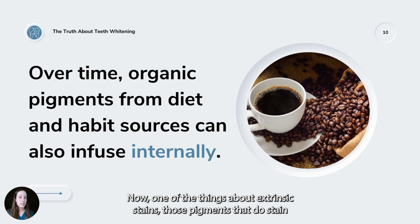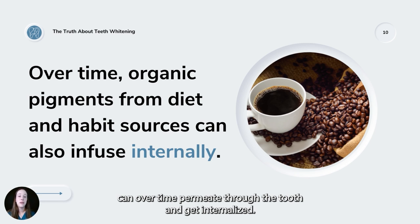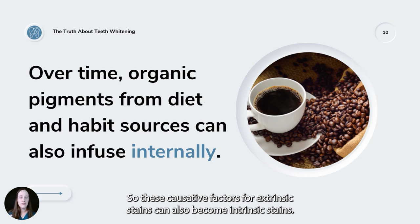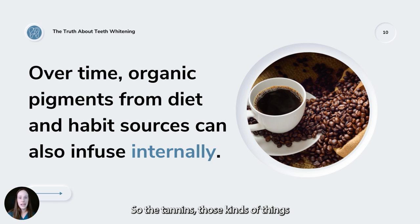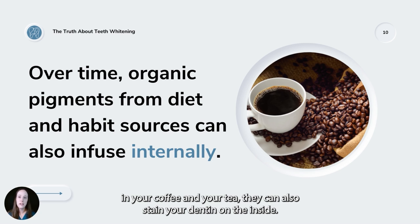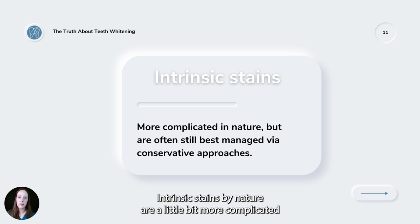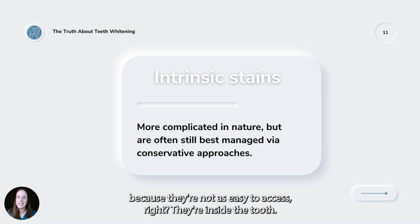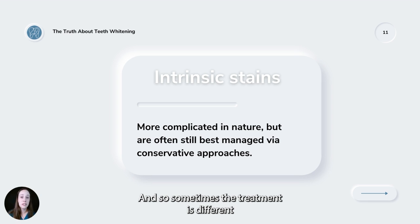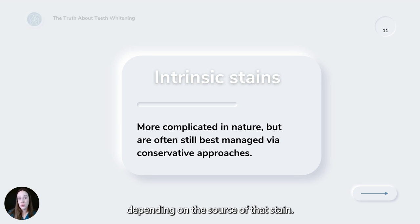One important thing about extrinsic stains: those pigments that stain can over time permeate through the tooth and get internalized. So the same causative factors for extrinsic stains can also become intrinsic stains. The tannins in your coffee and tea can also stain your dentin on the inside. Intrinsic stains are a little more complicated because they're not as easy to access — they're inside the tooth — and treatment differs depending on the source.